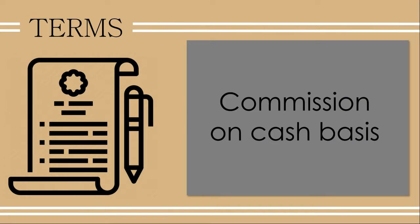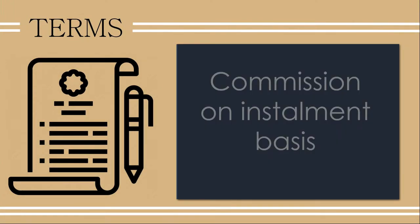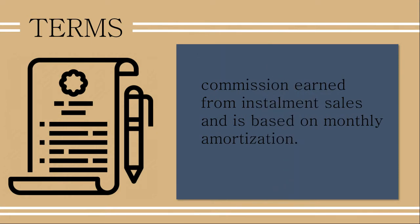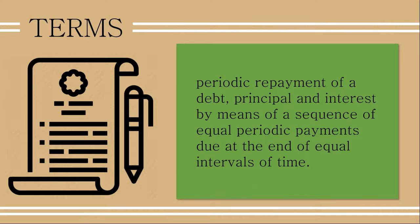Second, commission on cash basis — it is a commission earned from cash sales taken as a percentage regardless of the time. Then we have commission on installment basis, which is the commission earned from installment sales and is based on monthly amortization. Amortization is the periodic repayment of a debt — principal and interest — by means of a sequence of equal periodic payments due at the end of equal intervals of time.